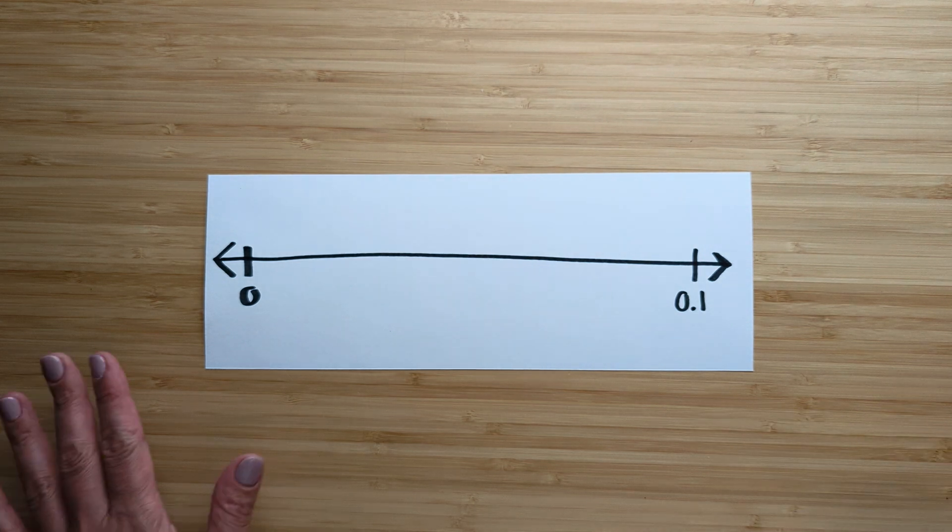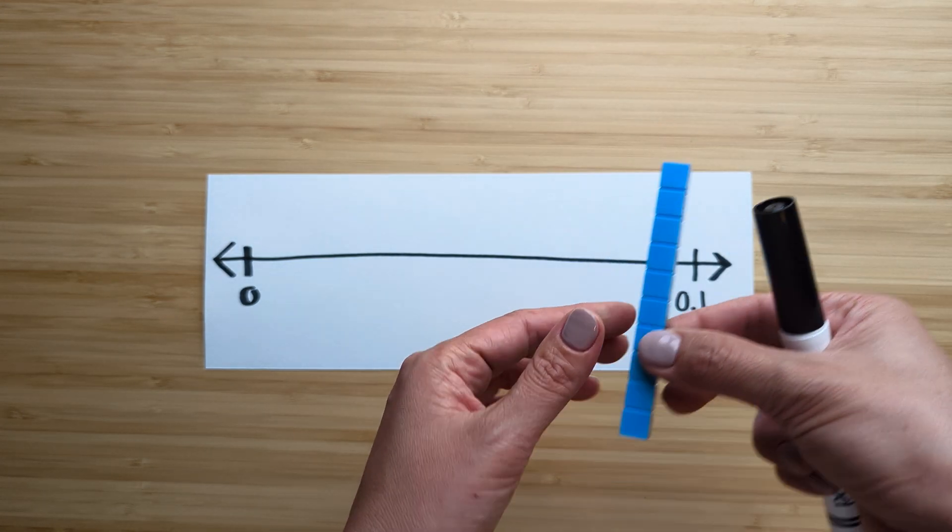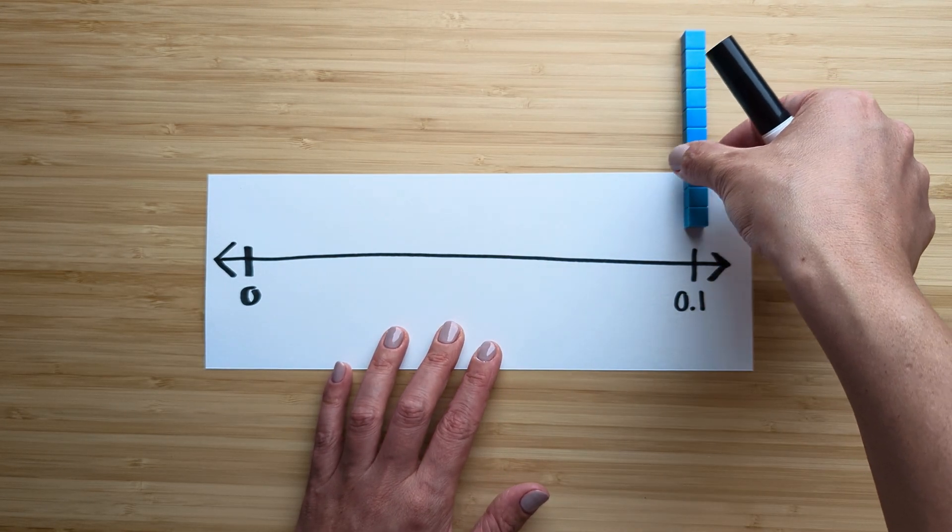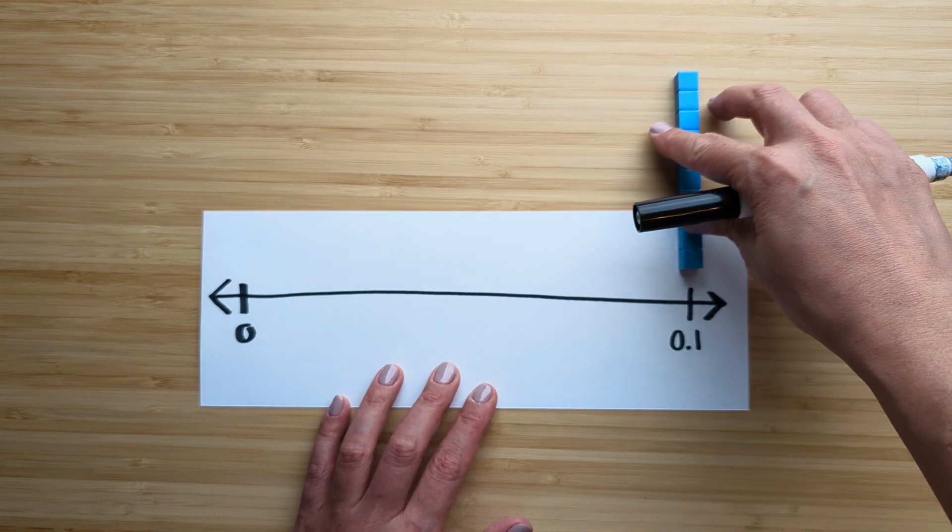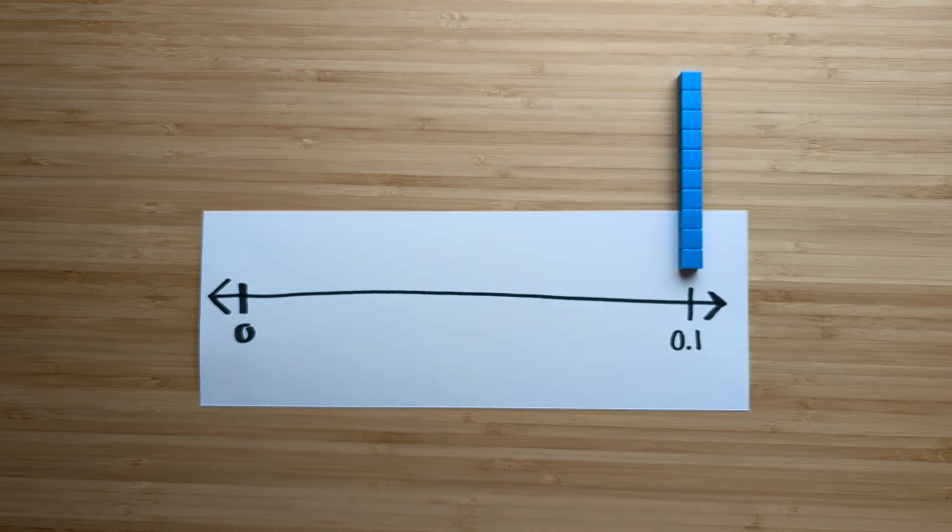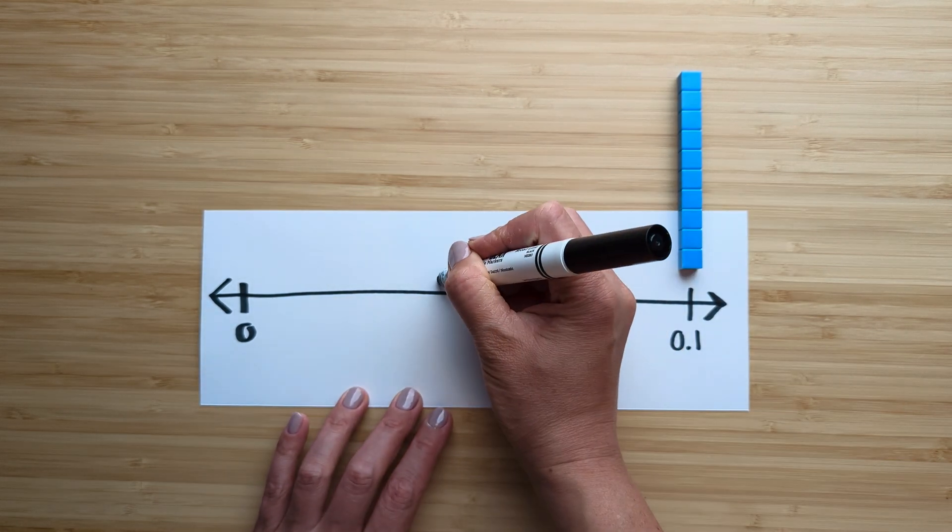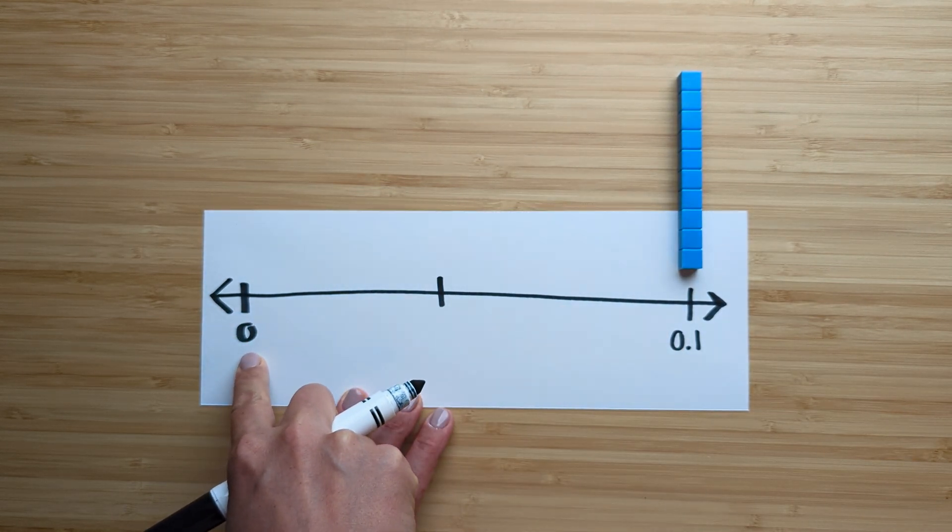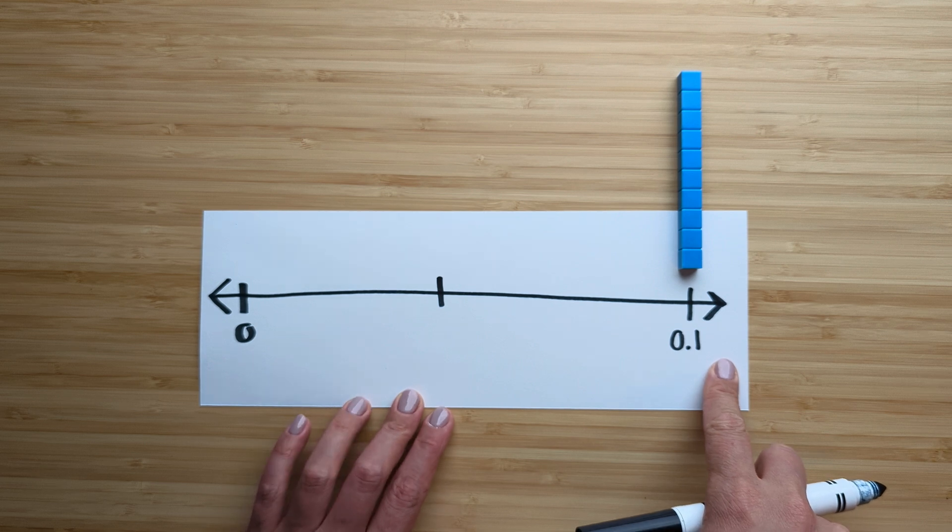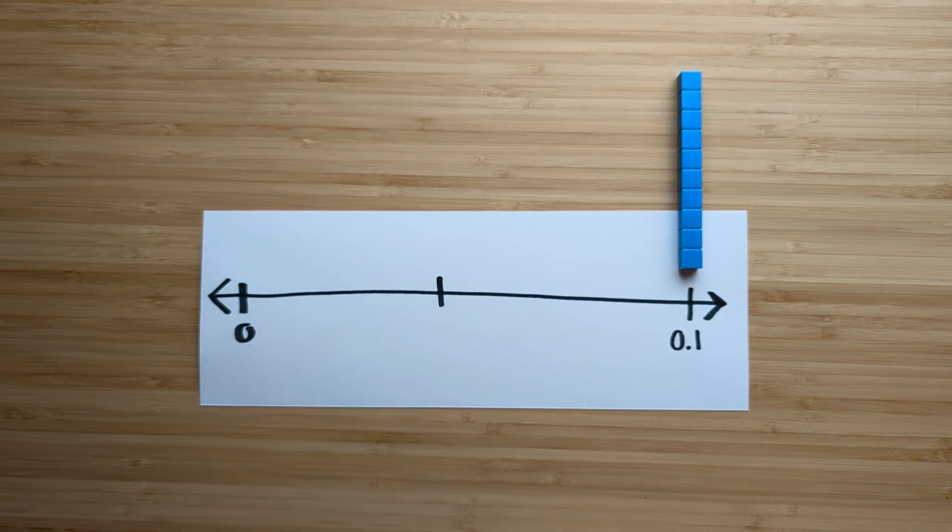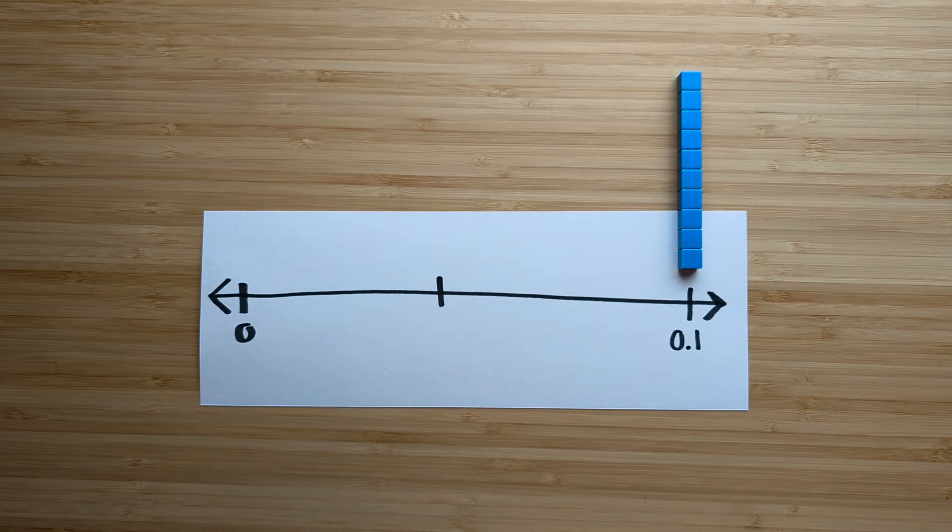Okay, so nothing to one tenth. One tenth right here. Now I want you to think about what's the middle. If this is zero and this is one tenth, what would the middle be?